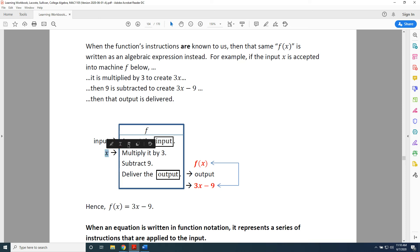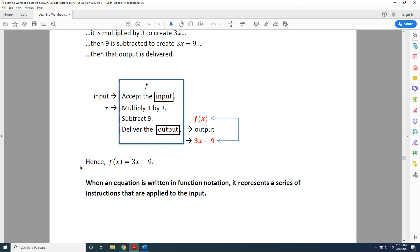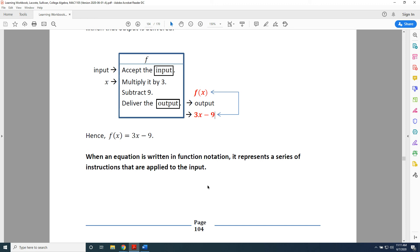So when an input x goes into a machine f, the output is f of x, which in this particular case equals 3x minus 9. Hence, f of x equals 3x minus 9. When an equation is written in function notation, it represents a series of instructions that are applied to the input.